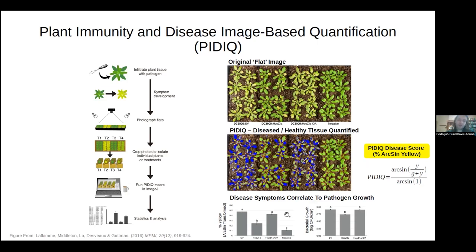This is a very useful metric for efficiently screening immunity elicitation responses of a plant host — in this case Arabidopsis thaliana — to Pseudomonas syringae in a high-throughput manner. It correlates reliably to gold standard approaches for measuring virulence and immunity elicitation through bacterial growth, which requires destructive tissue operations. You can overcome all of that by simply taking an image of a plant.